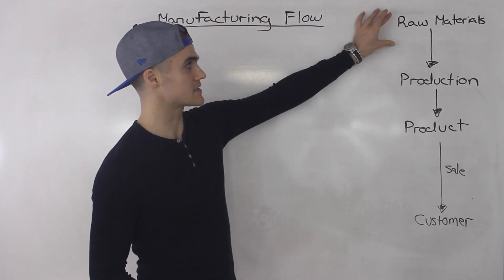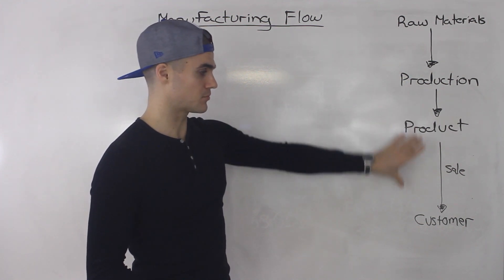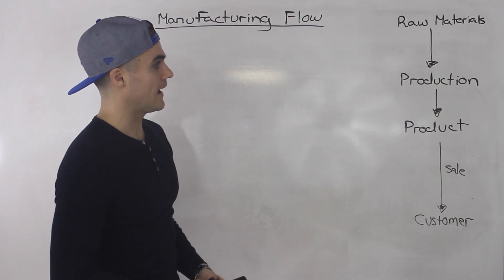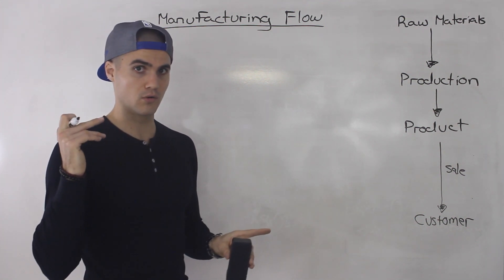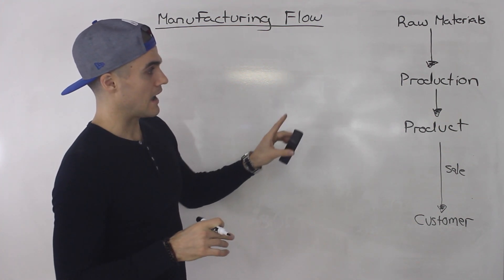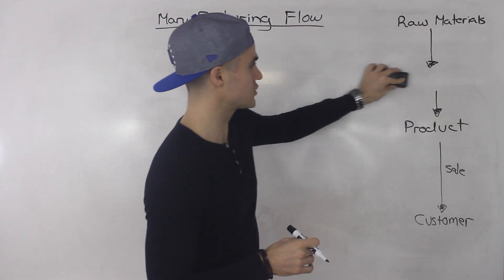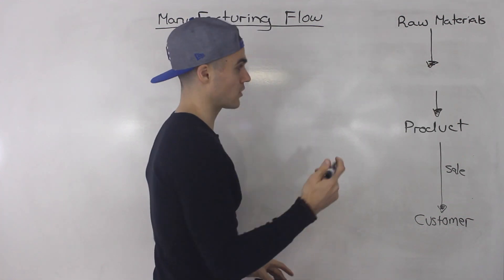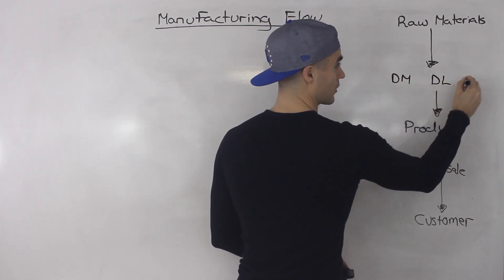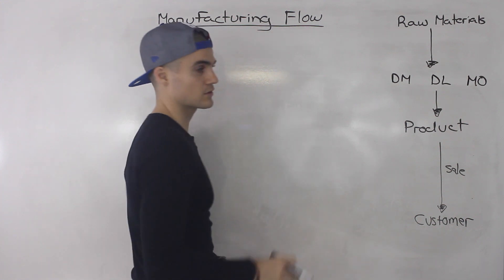As a recap, a manufacturing company takes raw materials, puts them into production, you get your product, and then you take your product and sell it to a customer. We're going to go into more detail here. If you remember the video on product costs and period costs — highly recommend you watch that before this one — I mentioned that product costs happen in production, in the factory, and there are three types. So instead of just writing 'production,' I'm going to write those three types of product costs: direct materials, direct labor, and manufacturing overhead.